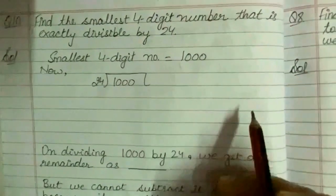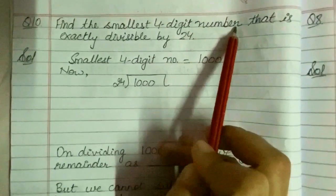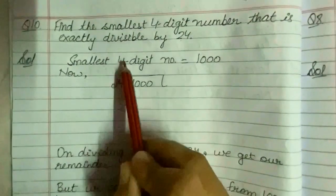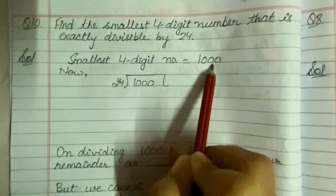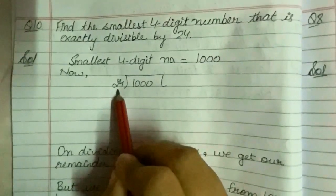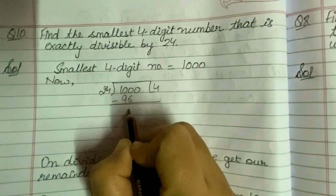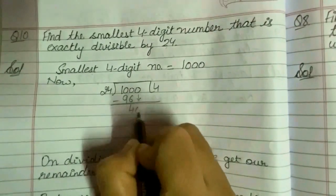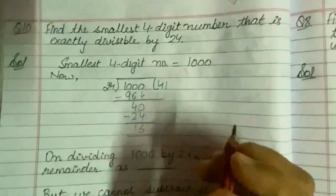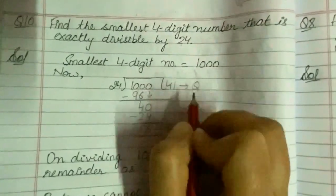Now next I have taken question number 10. It says: find the smallest 4-digit number that is exactly divisible by 24. As we know, the smallest 4-digit number is 1,000. We will divide this number by 24. 24 fours are 96; 100 minus 96 will give us 4. The 0 will be carried. 24 ones are 24 and on subtracting we get 16 as our remainder. So 16 is the remainder and 41 is the quotient.